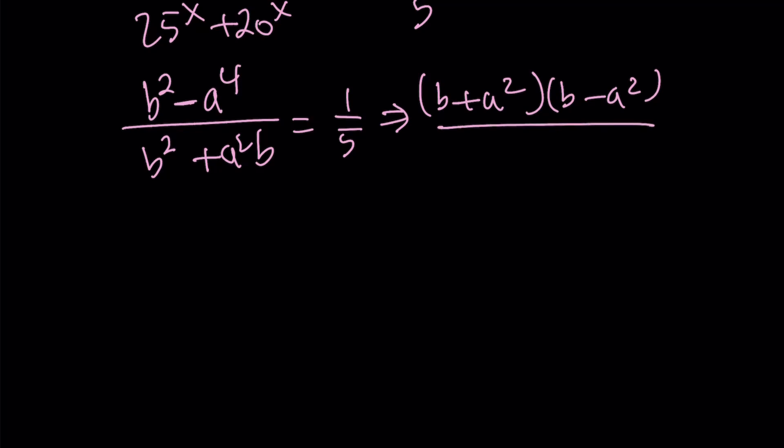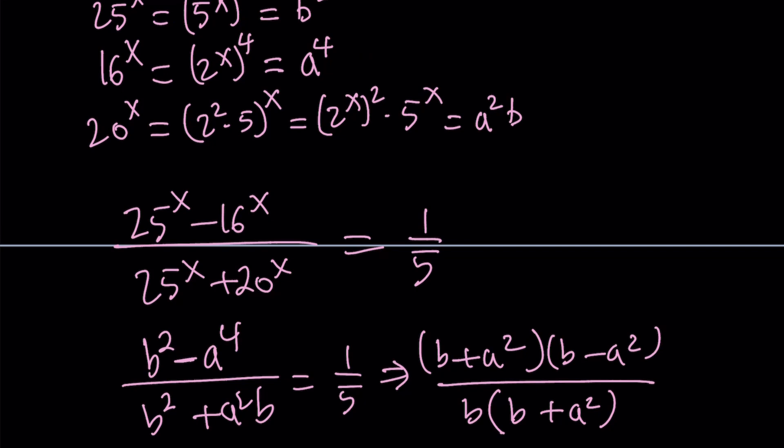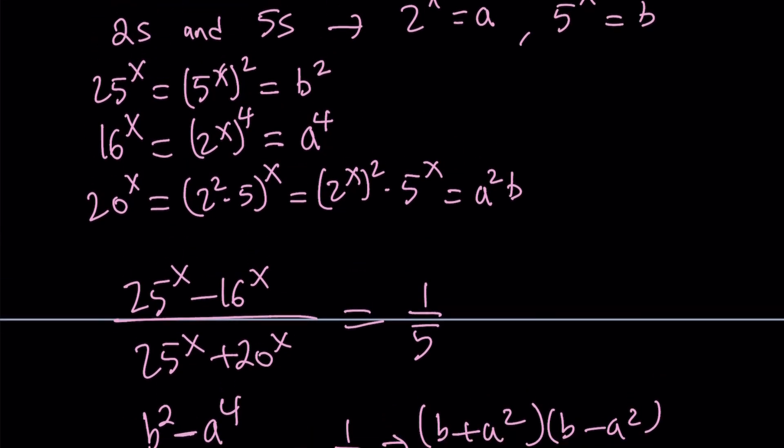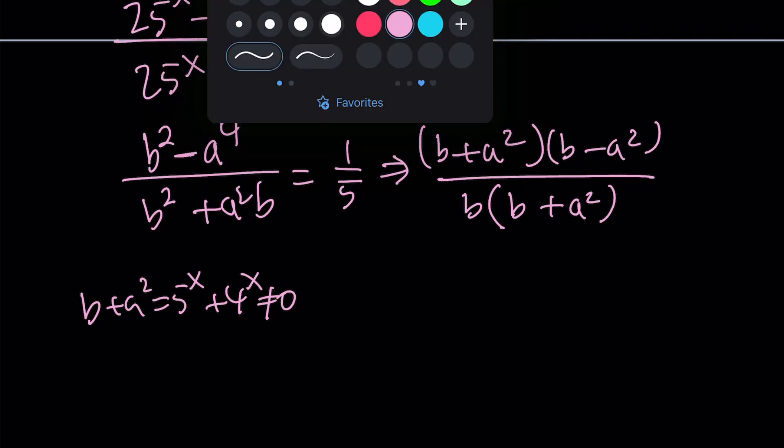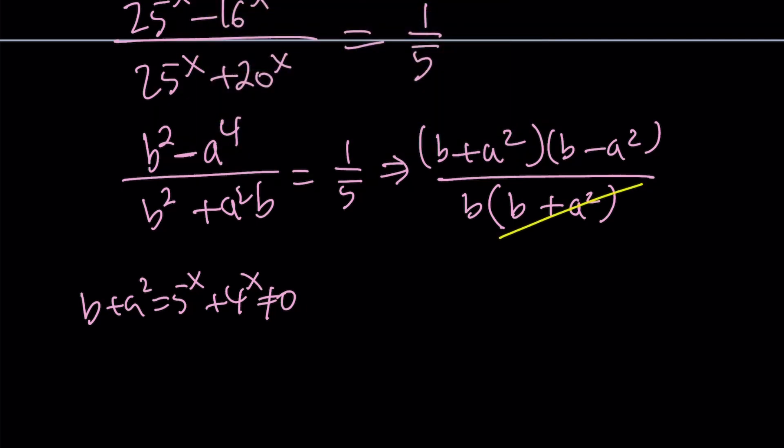And the bottom, the two terms have a common factor, b. Inside the parentheses, we have b plus a squared. Now notice that b is 5 to the power x, so b plus a squared becomes 5 to the x plus 4 to the x, which is not going to be 0 at all. So in this case, we can go ahead and simplify this. Cross these out, and this is equal to 1 over 5.